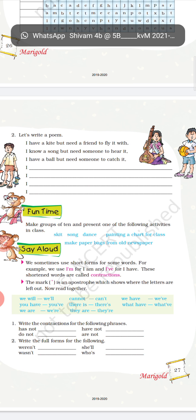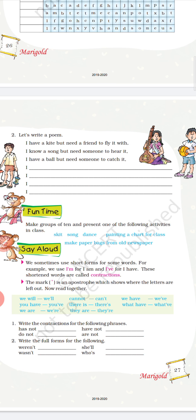Now, move towards the fun time — make a group of ten and present one of the following activities in the class. Abhi aap logon ko kya karna hoga? Humein das-das bachon ko lekar ek group banana hai aur group banane ke baad hum ek skit ya natak pesh kar sakte hain, group song, group dance — jaise Republic Day aur Independence Day par hum group song aur group dance karte hain — ya phir painting a chart for the class.